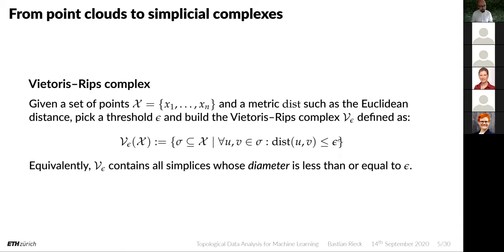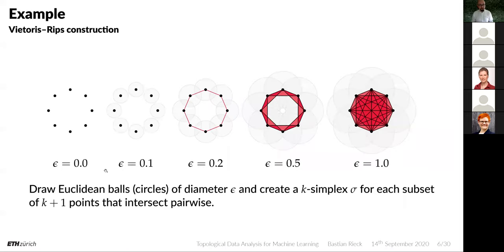Equivalently, the Vietoris-Rips complex V_epsilon contains all the simplices whose diameter — the maximum distance between them — is less than or equal to epsilon. I will only write V_epsilon to indicate a Vietoris-Rips complex of some space, and hope it's clear which space it's calculated from. So first example: how does that look in practice? We take this point cloud and take certain epsilon values, indicating those as disks or balls around the individual points.